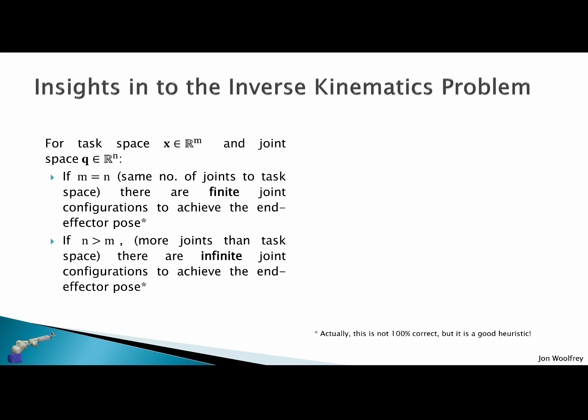If n is greater than m, that is we have more joints than the task space, there are infinite joint configurations to achieve the end effector pose. A robot with more degrees of freedom in the control space than required by the task space is said to be redundant.